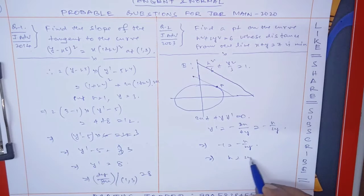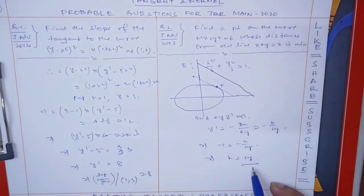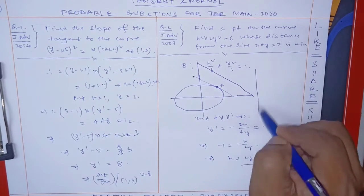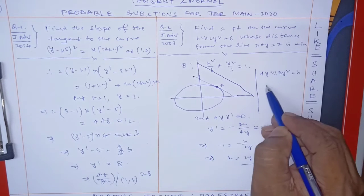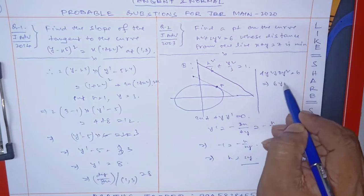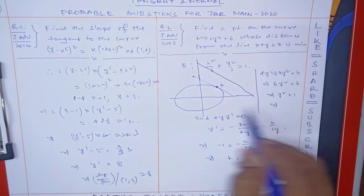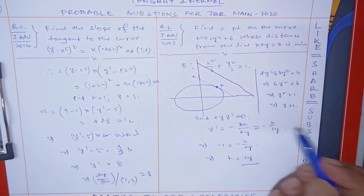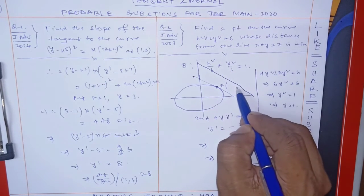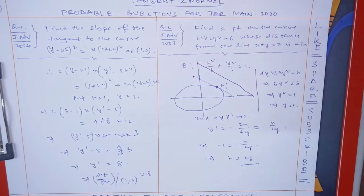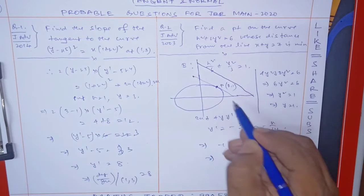So that means x = 2y. Since the point is on the curve, substitute x = 2y into the ellipse equation. So 4y² + 2y² = 6, giving 6y² = 6, so y² = 1. Since the point is in the first coordinate, y = 1. When y = 1, x = 2 times 1 = 2.